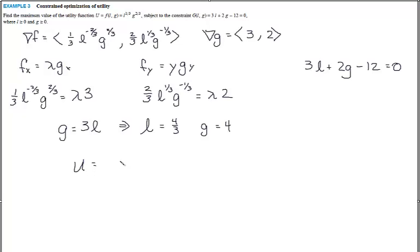You'll need to plug that into your utility function, so u would equal, I'm plugging that in, the 4/3, so that would be (4/3)^(1/3), and then 4^(2/3). You'll end up with 4 over the cubed root of 2, which is then about 2.8, would be your maximum value for this utility function subject to this constraint equation. And that's it for this section.